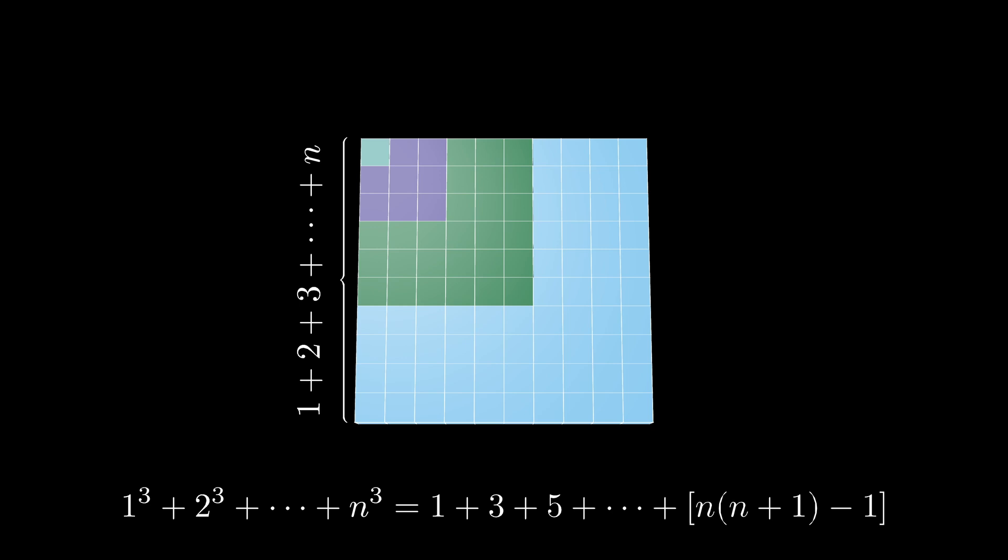This means the total number of unit cubes, which was given by the sum of the odd numbers from 1 to n times n plus 1 minus 1, must also equal the square of the sum of the first n positive integers.